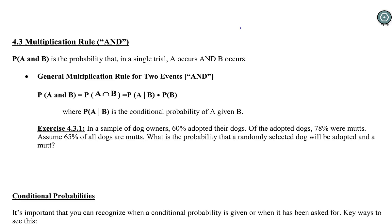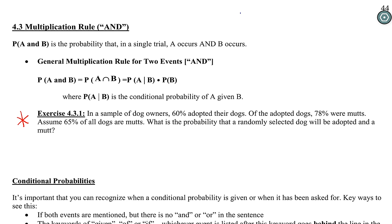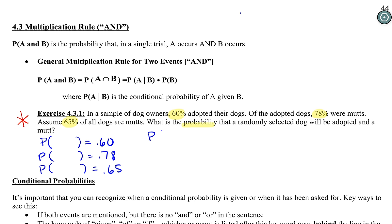Let's see this question in action. This particular question is one I've put on exams in the past — very similar questions are pretty much on every exam. I'm going to give you a moment. I want you to do what we did in the question from 4.2 with the cats. We have three different probabilities here and a probability we're looking for. Figure out what these probabilities should be in terms of probability notation — 60%, 78%, 65% — then pause the video and decide what they are.